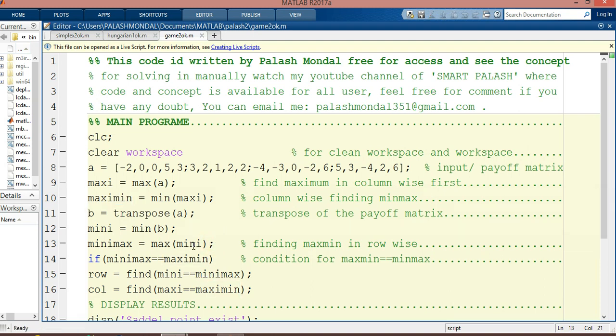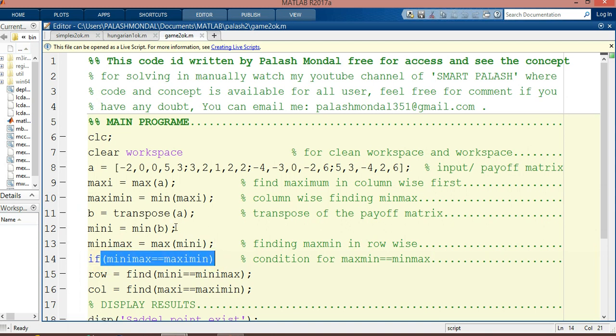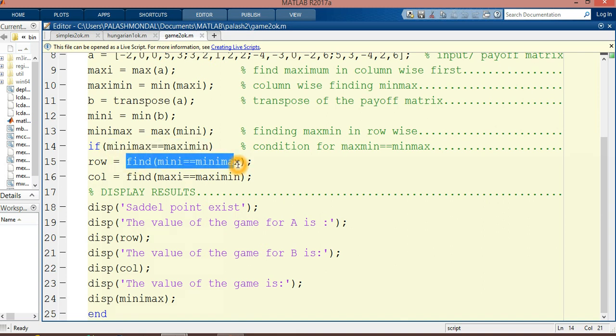After that we see or find if the min-max and max-min is equal or not. If it is equal, then row equals find the min-max minimum of min-max and column wise find the maximum of minimum. That's our program set.